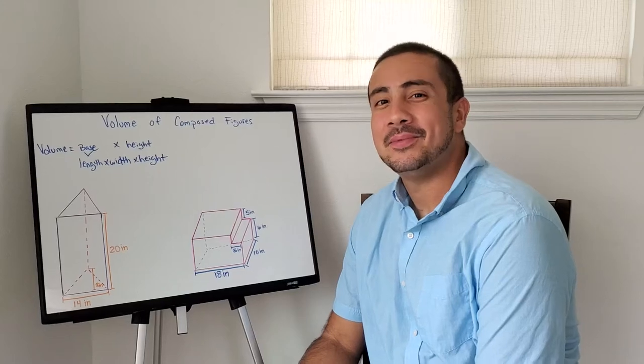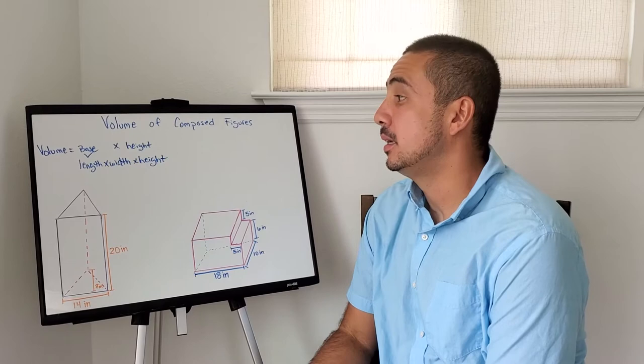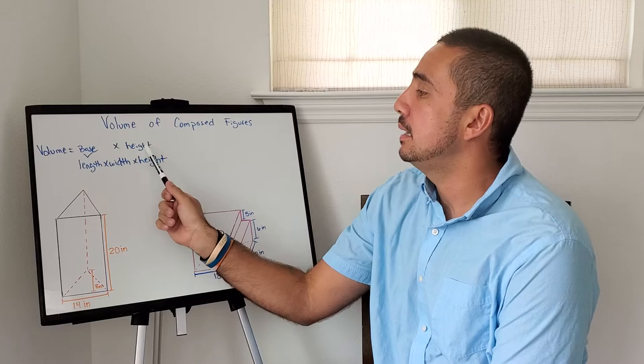I'm ready for another week of math. We're talking about volume of composed figures. The formula for volume is length times width times height, or base times height. Base is when we're talking about a triangle, like this prism right here.